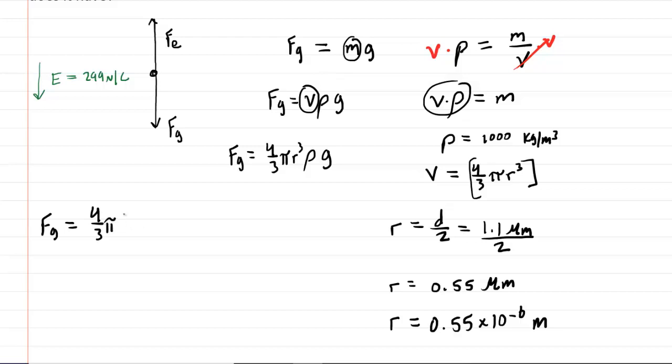So we have 4 thirds times pi times this radius. Don't forget to cube the radius, multiplied by the density of the water, and then multiplied by g, which of course is 9.8 meters per second squared.